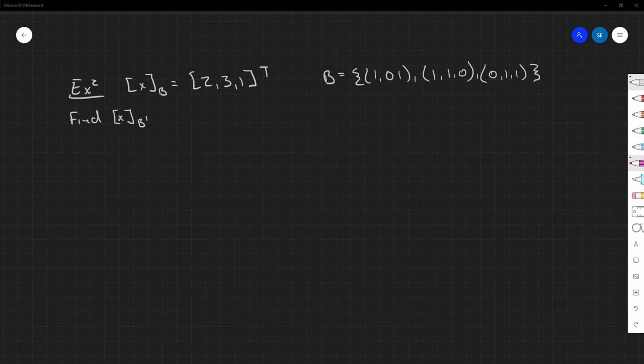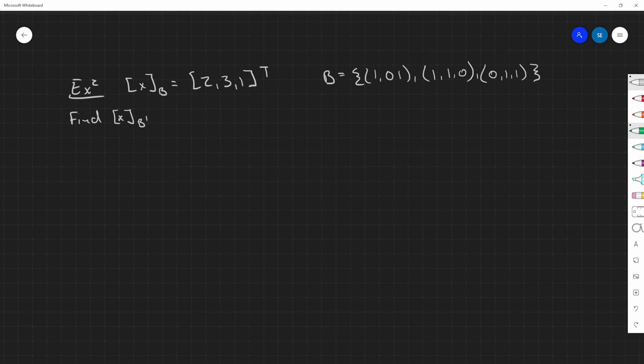And so we're asked to find x in terms of b' or base b'. So the usual, we got to do the transpose, and so that would just simply become the column vector 2,3,1. Again, this is our translator, and so to find x b', I'm just going to go ahead and use a short method. So it's going to be a, b, c, and we know it's going to be c1 a, plus c2 b, plus c3 c.